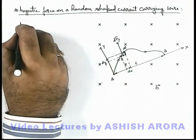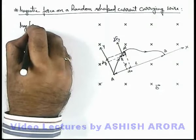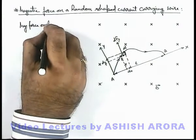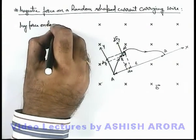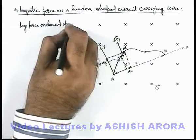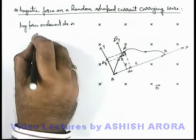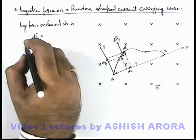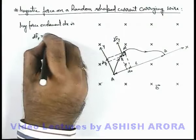If we calculate the magnetic force on element dx, this can be written as dFy, and the magnitude of this can be given by Bi dx.